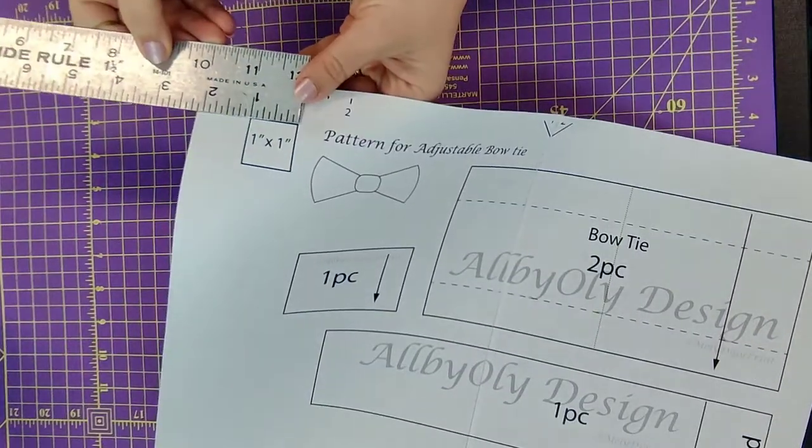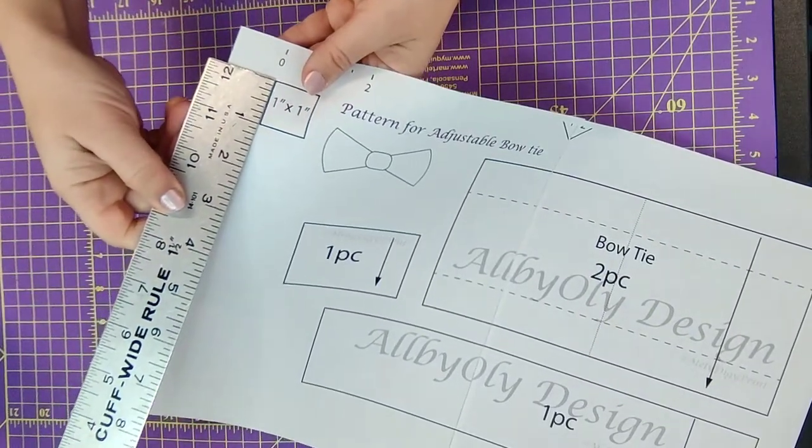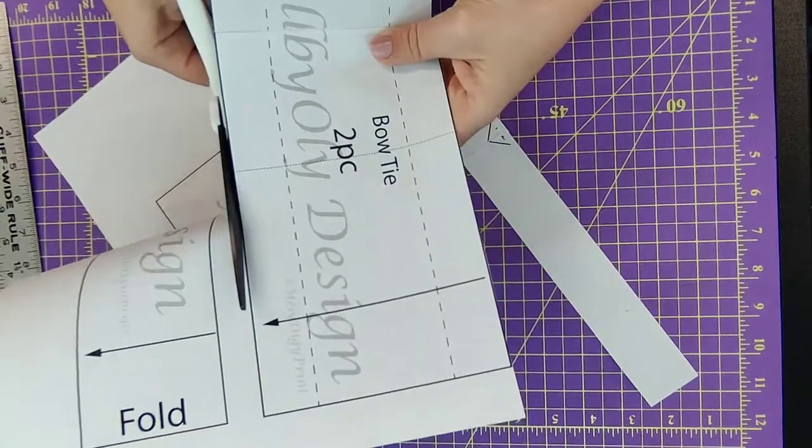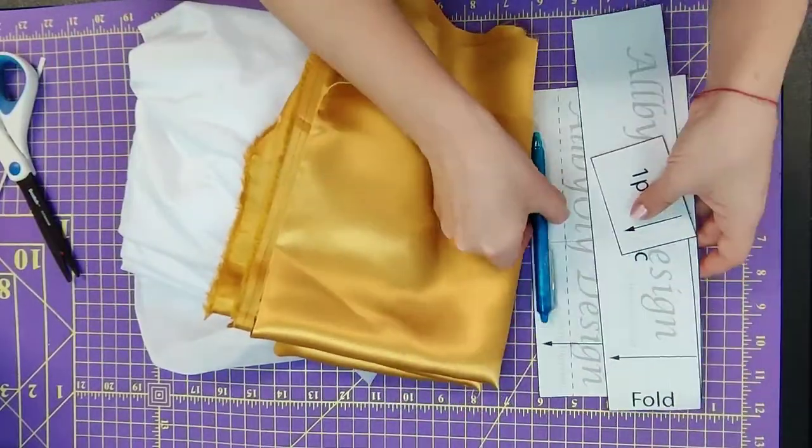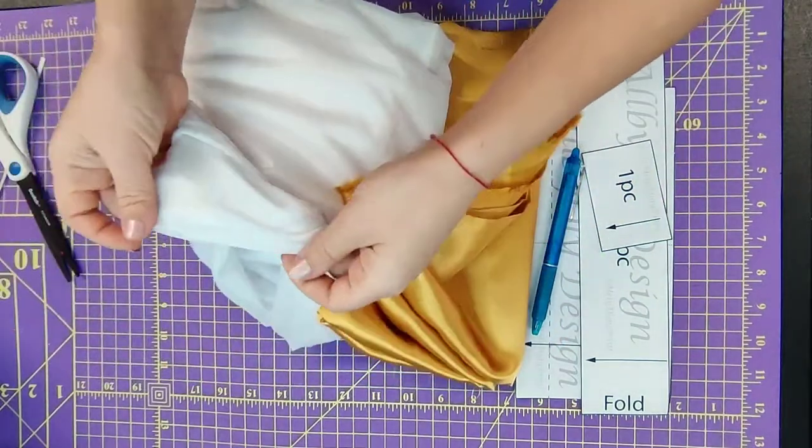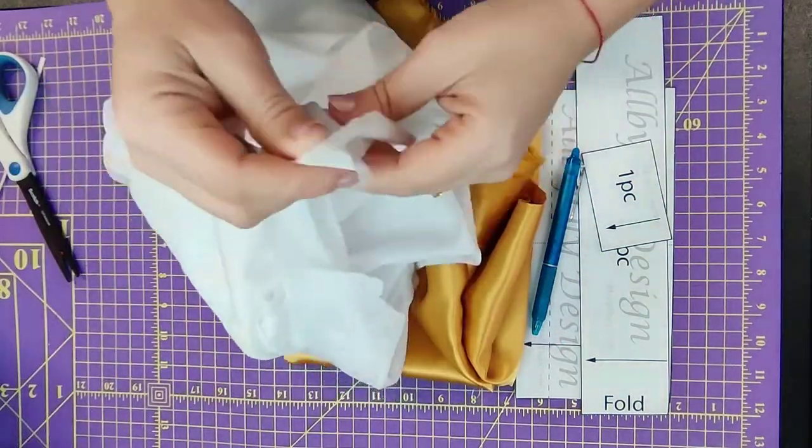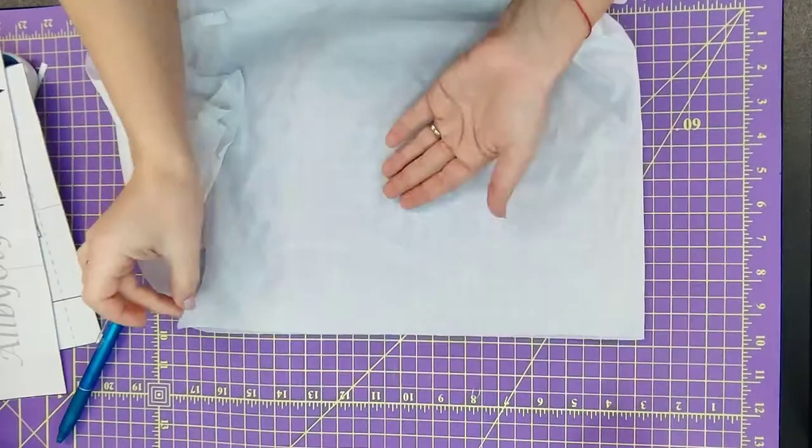Before you cut the pattern, double check the measurements of the square on the side. It should be one by one inch. All what you need is a pattern, erasable pen or chalk, the fabric, and fusible or interfacing. Make sure there is a fabric base and one side has glue.